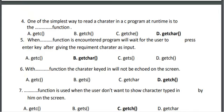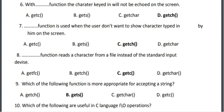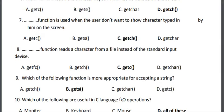Sixth, with the getch() function, the character keyed in will not be echoed on the screen. The correct answer is D, getch. Seventh, getch() function is used when the user doesn't want to show the character typed by him on the screen. The correct answer is C, getch.